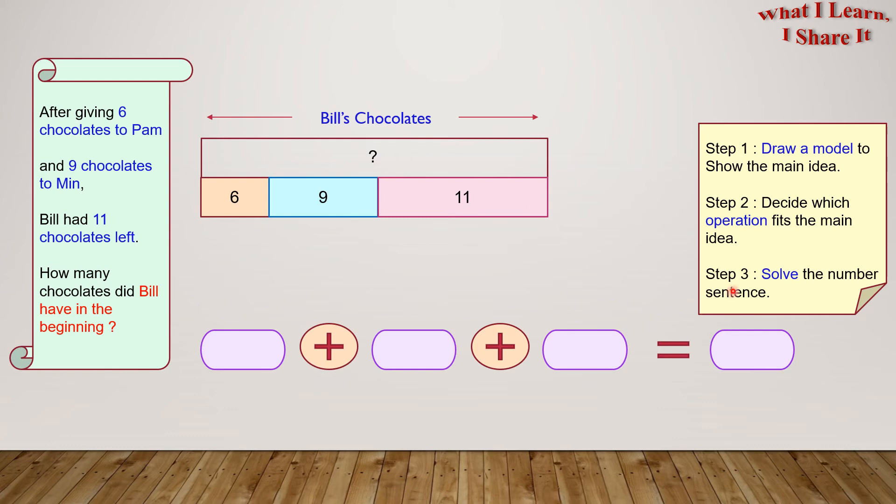Step 3: Solve the number sentence. Now, 6 comes from here. Plus 9, which comes from here.